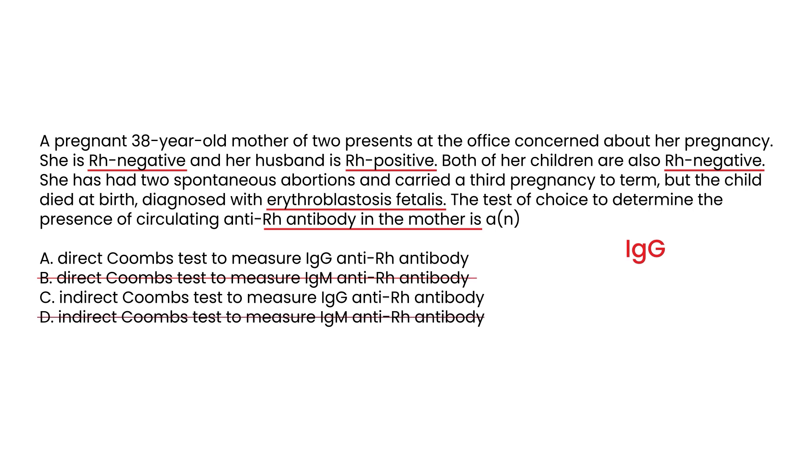Now we have to think about: are we doing a direct Coombs test or indirect? Remember, a direct Coombs test measures antibodies that are attached to a red blood cell, whereas an indirect Coombs test measures circulating antibodies. The direct Coombs test is done with the blood of the newborn baby, and the indirect Coombs test is done with the blood of the mother. So you would want to do an indirect Coombs test which measures IgG. That would be choice C.